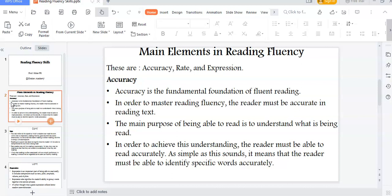Accuracy is the fundamental foundation of fluent reading. In order to master reading fluently, the reader must be accurate in reading texts. The main purpose of being able to read is to understand what is being read.